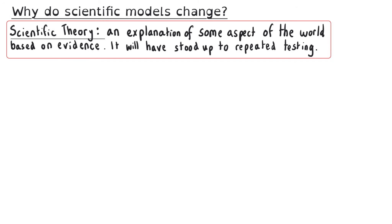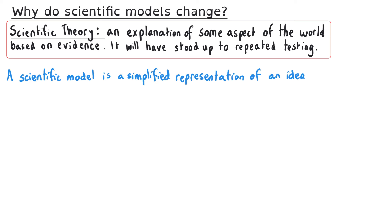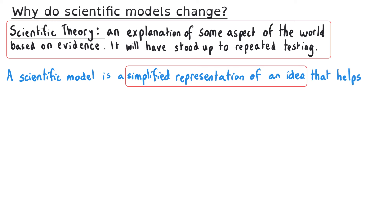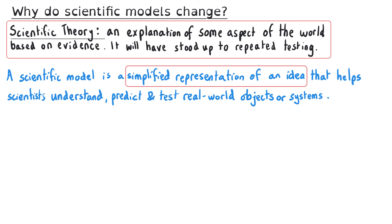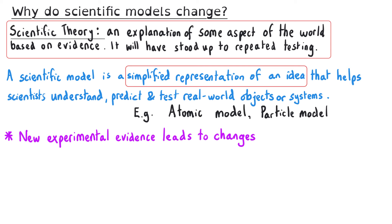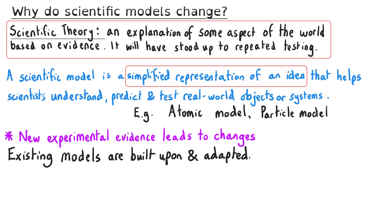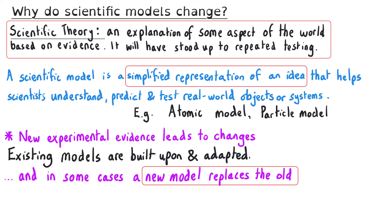Before looking at the details of why our model of the atom has changed, let's first look at what a model or a theory is. A scientific model is a simplified representation of an idea that helps scientists to understand, predict and test real world objects or systems. For instance there is the atomic model, which we're looking at in this video, but also the particle model. New experimental evidence can be uncovered, which can lead to changes in a model where existing theories are built upon and adapted, and in some cases a new model can replace the old one.